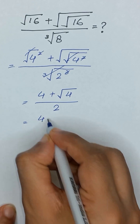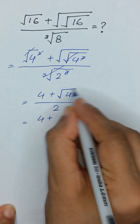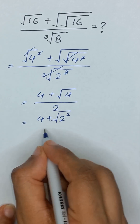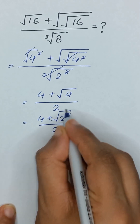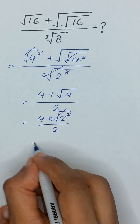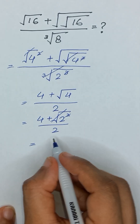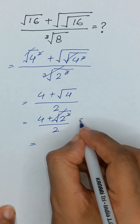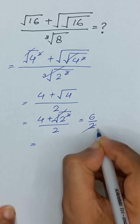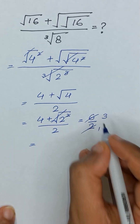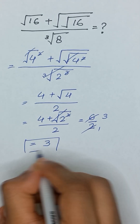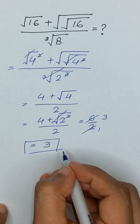Now 4 plus square root of 4 is the same as 2 squared and its square root, divided by 2. This square and square root will be cancelled out, and it will become 4 plus 2, which equals 6 divided by 2, equal to 3. Thanks for watching.